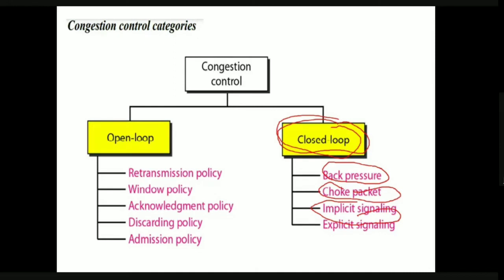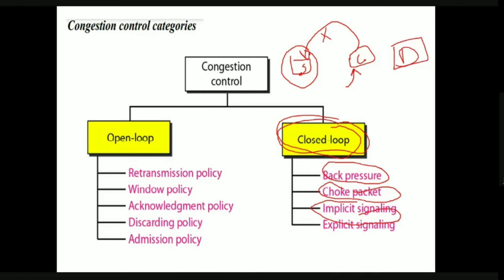The third technique is implicit signaling. In implicit signaling, there is no direct communication between the congested node and the source. Instead, the source guesses congestion from symptoms — for example, when the sender transmits many packets but receives no acknowledgement from the destination, it concludes there may be congestion and slows down.